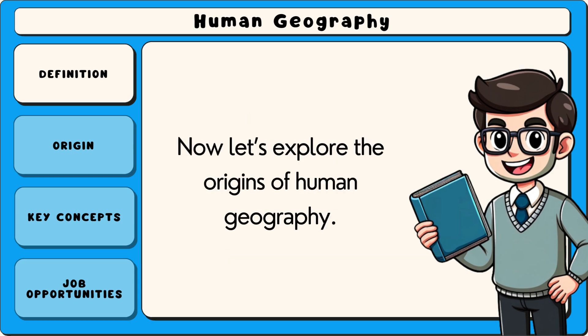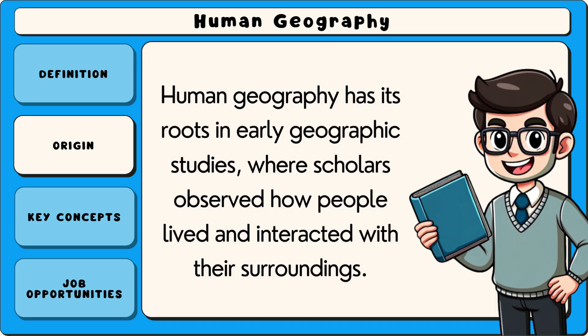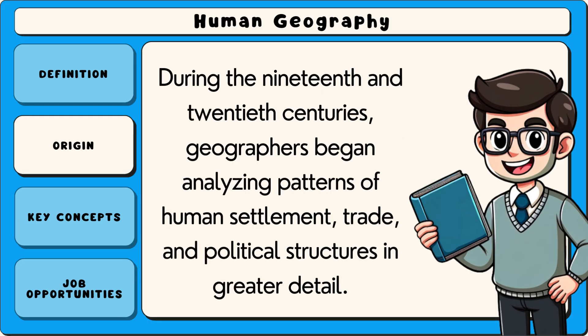Now let's explore the origins of human geography. Human geography has its roots in early geographic studies where scholars observed how people lived and interacted with their surroundings. During the 19th and 20th centuries, geographers began analysing patterns of human settlement, trade and political structures in greater detail.